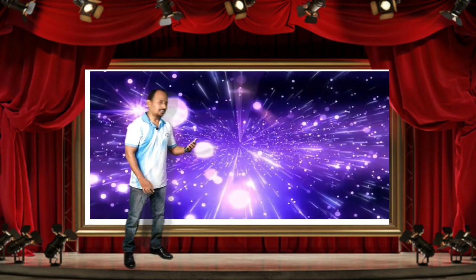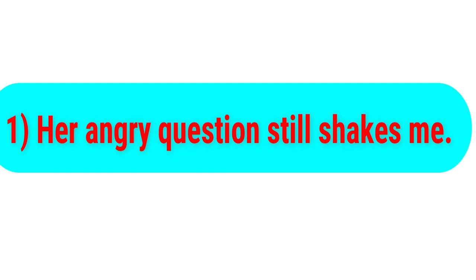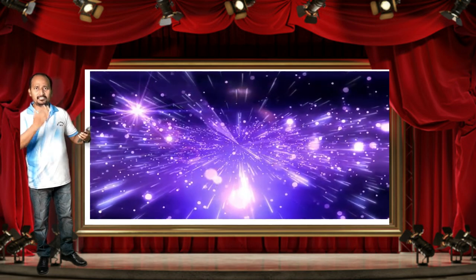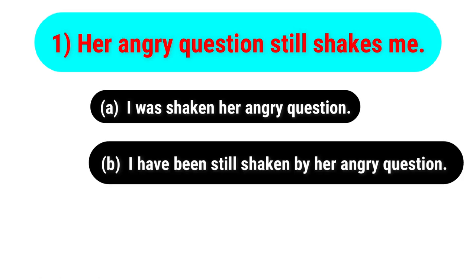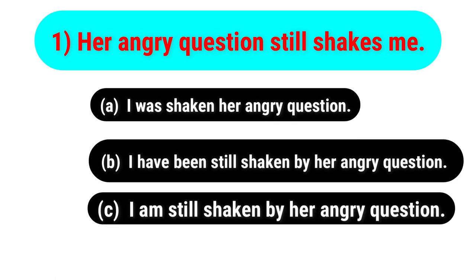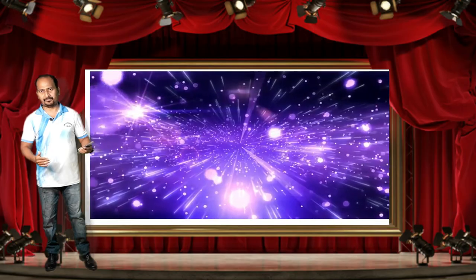The first question is an active voice sentence: 'Her angry question still shakes me.' The options for the passive voice are: A) I was shaken her angry question; B) I have been still shaken by her angry question; C) I am still shaken by her angry question; D) Me was still shaken by her angry question. Your time begins now.